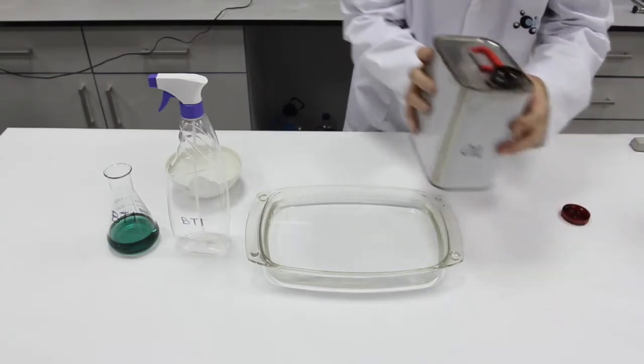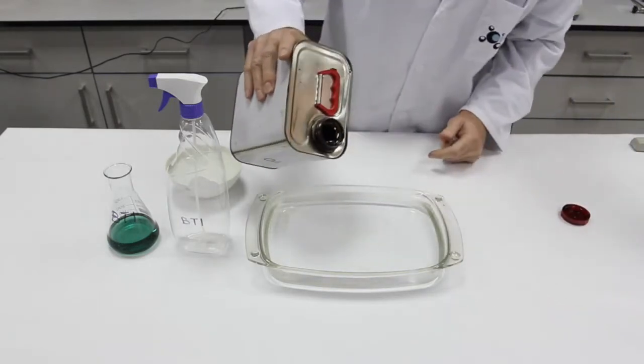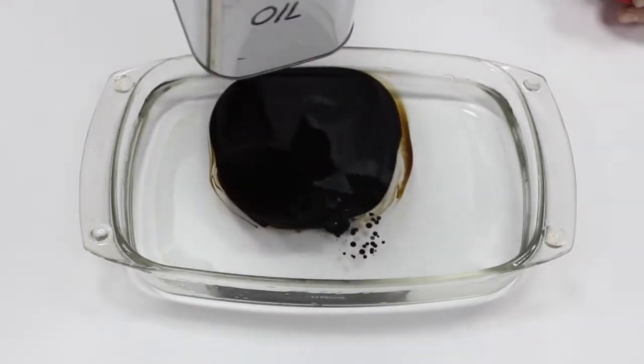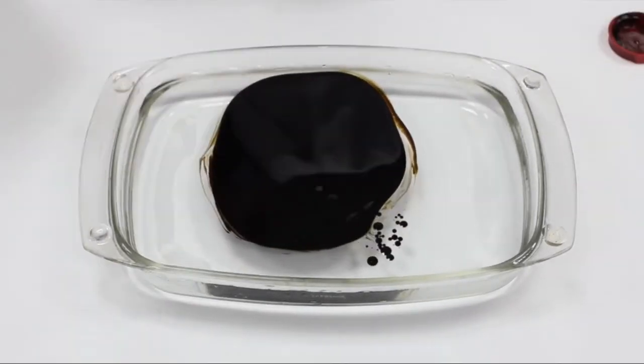The lab technician has filled a glass tray with water to simulate a marine ecosystem. Crude oil is then poured over the water's surface to generate a spot with an extension of 15 cm.